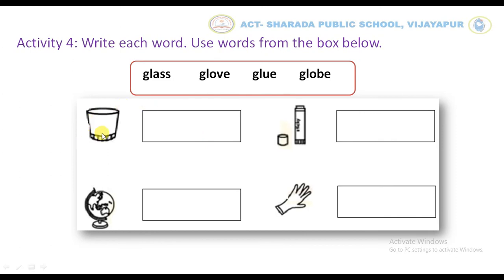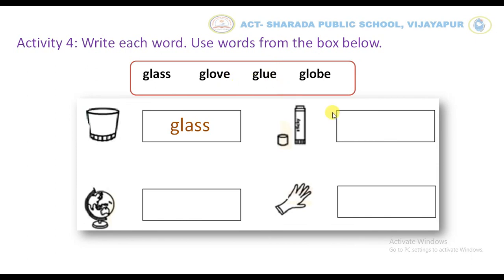For example, children, what is this? It is glass. Very good. Now write the word glass here, like this. Children, tell me what is this? Yes kids, it's glue. Now write the spelling of glue here.